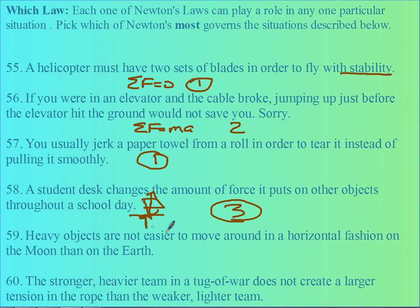Heavy objects are not easier to move around in a horizontal fashion on the moon than on the earth. That's because the applied force is ma. And so, that is the second law.